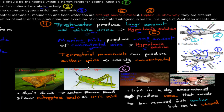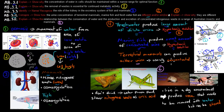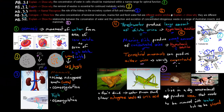The terrestrial mammal can produce either concentrated or diluted urine depending on the environment it lives in. If there is lots of water available, it produces dilute urine; if there is little water, it produces concentrated urine. Most mammals produce concentrated urine because they are often lacking water.